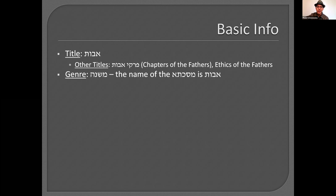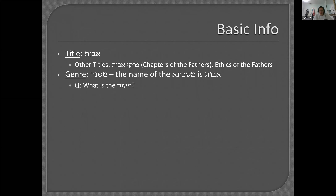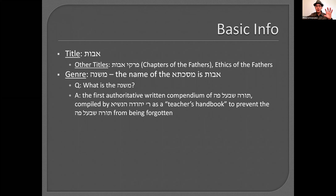This is a review for everyone, but especially for my students who had Ohio and Gemara. What is the Mishnah? It's the oral law that was passed down orally until Rabbi Yehuda HaNasi wrote it down around 200 CE. And why did he write it down? Because it was in danger of being forgotten. Excellent. So this is the first written-down Torah SheBe'al Peh, compiled by Rabbi Yehuda HaNasi as a teacher's handbook to prevent it from being forgotten.